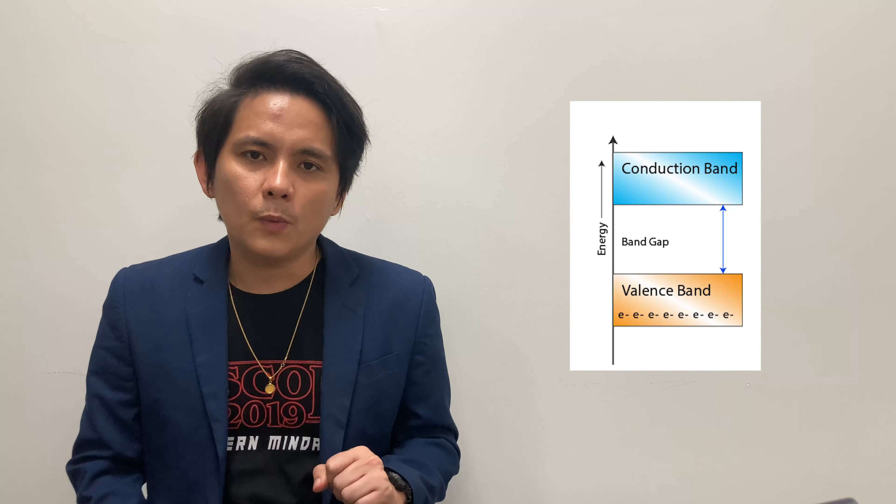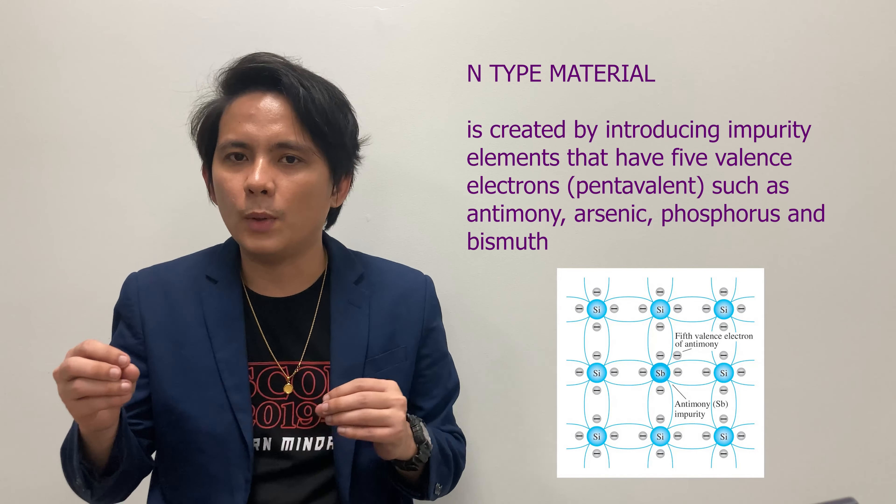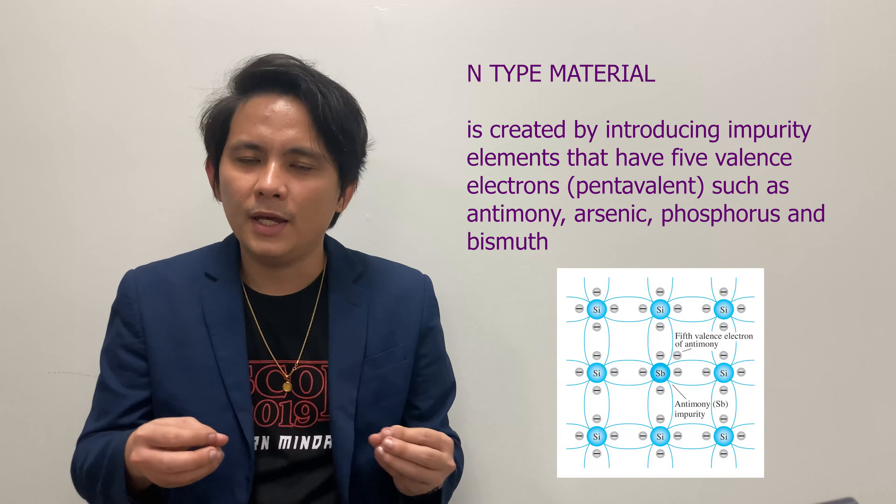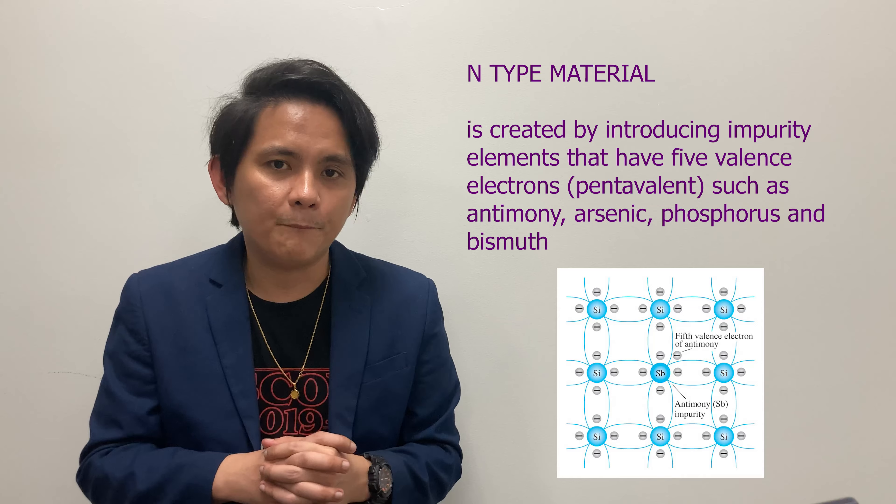N-type materials are created by introducing impurities with five valence electrons, such as antimony, arsenic, phosphorus, and bismuth. In the covalent bonding shown between silicon and antimony, antimony has five valence electrons added to the pure silicon material's four valence electrons, giving a total of nine valence electrons. The excess valence electrons give the material a net negative charge, and that is why it is named N-type material.